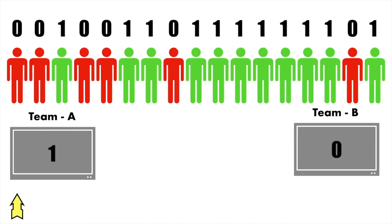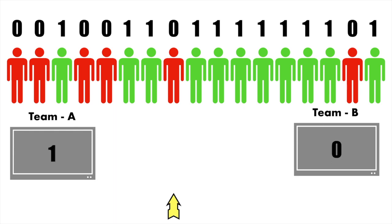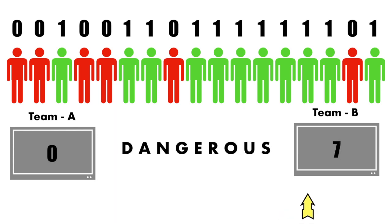Let me explain with a final, bigger string example. We start counting team A: one, two. Then we nullify team A and count team B: one. Then vice versa — one in team B, one in team A. Then again: one, two, three, four, five, six, seven. One of the counters — either team A or team B — reached seven, so the counter stops and returns a dangerous signal.